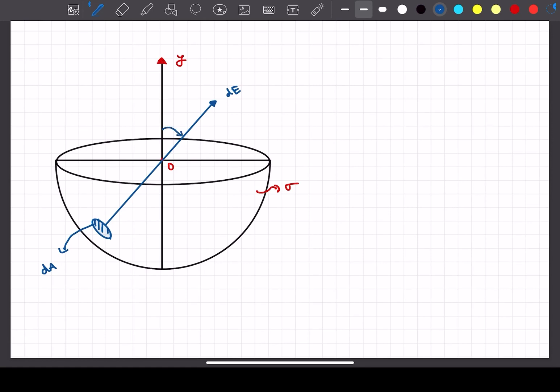Let's say the angle the dE vector makes with the y-axis is alpha. Now the magnitude of dE is simply 1 by 4 pi epsilon naught, the charge of the element that is sigma multiplied by dA, divided by the distance squared which is r squared.